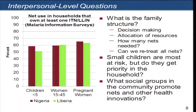On the interpersonal level, even though nets are in the household, vulnerable groups may not be using them. Demographic and health surveys done regularly in malaria-endemic countries have shown that less than the desired proportion — 80% — of children and pregnant women are actually using the nets every night. They may be there, but we need to find out what are the dynamics in that family and community that may be preventing the individual from using the net.